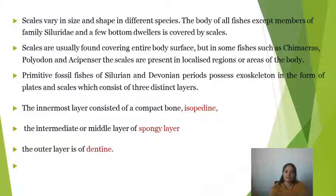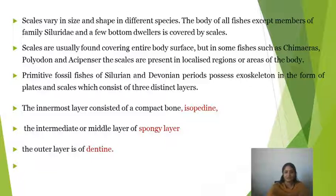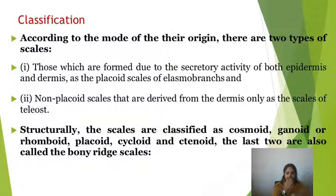Scales vary in size and shape in different species. The body of all fishes, except members of the Cyclostomata family and a few bottom dwellers, are covered by scales. Scales are present in three layers: the innermost layer is called Isopedine, the intermediate middle layer is called Spongy, and the outer layer is called the Dentine layer. Their arrangement differs in different types of scales.